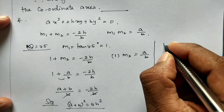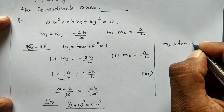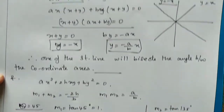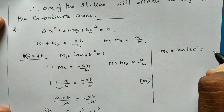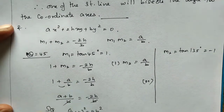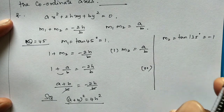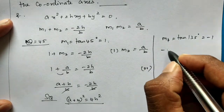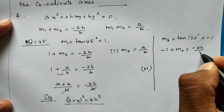The second method: M2 = tan(135°). Since 90° + 45° = 135°, tan(135°) = -1. So M2 = -1, and M1 = -1. Then: -1 + M2 = -2H/B.